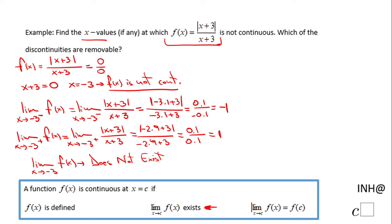And also because the limits are different—one is negative 1 and one is positive 1—this x equals negative 3 is unremovable.